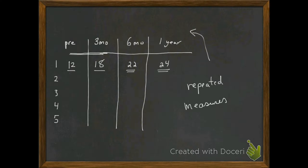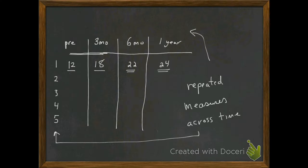We're taking repeated measures across time on the same individuals and under the same conditions. This is a classic repeated measures ANOVA illustration. Now, there are a lot of benefits to a repeated measures design.